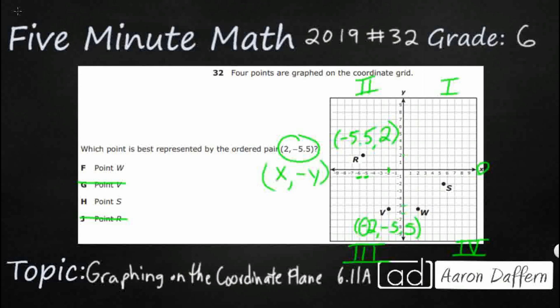And the only way that we have a positive x and negative y is down in quadrant 4. You see quadrant 1 has got a positive x and a positive y, so we don't need that. Quadrant 2 has got a negative x and a positive y, so that's not what we need either.